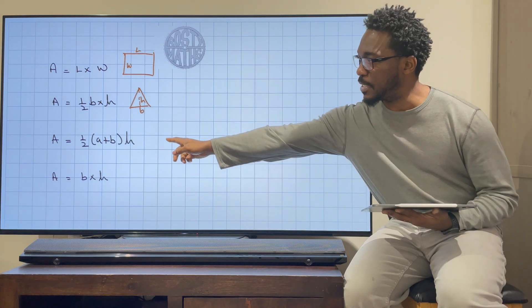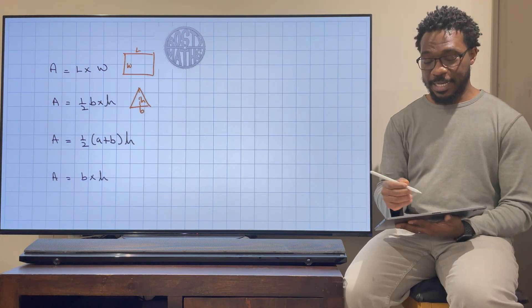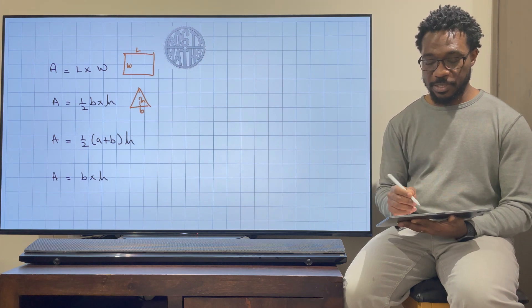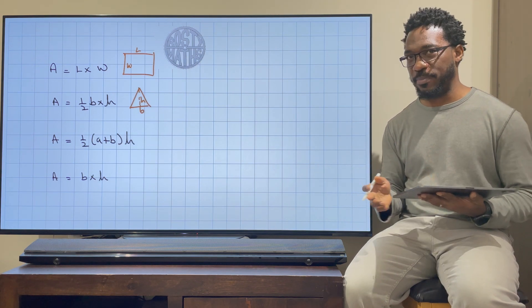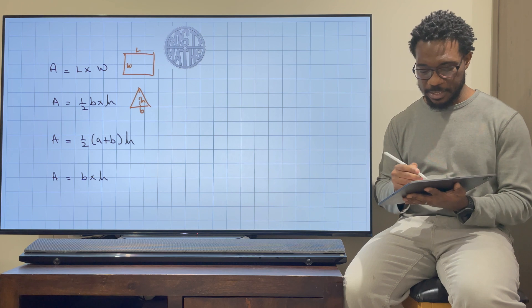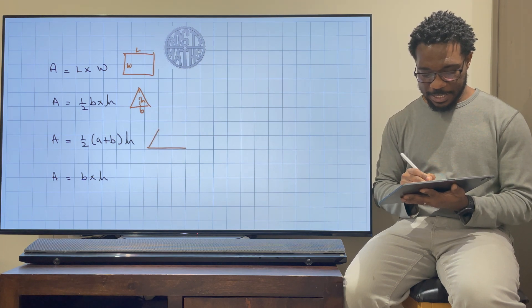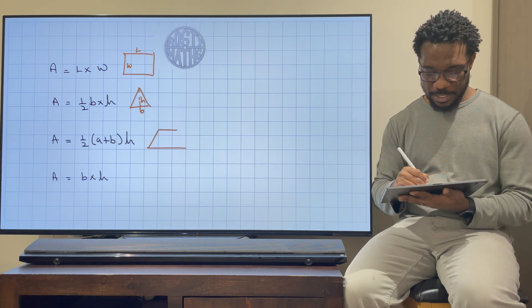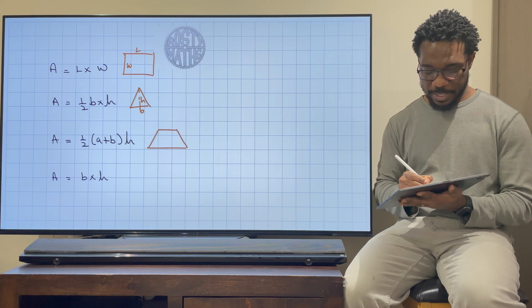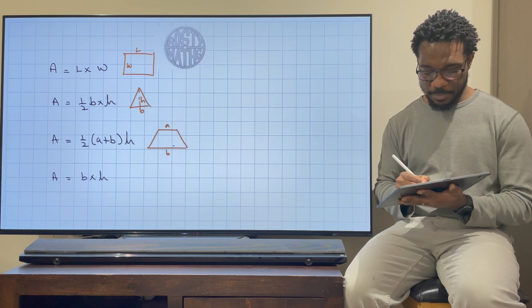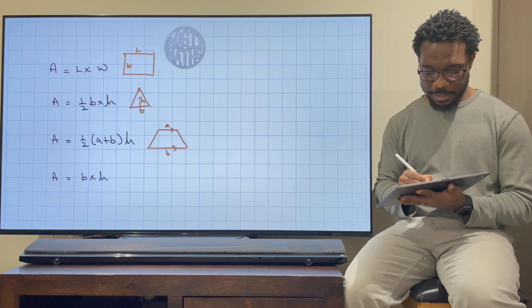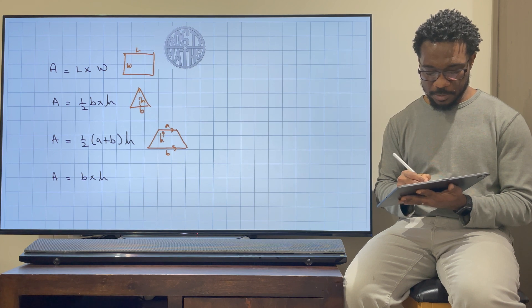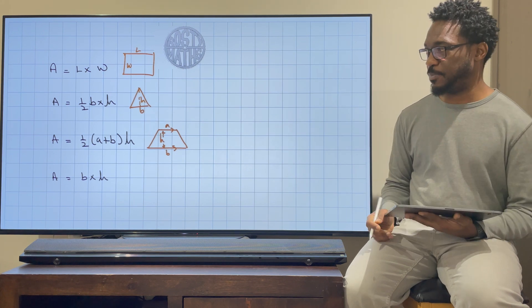You might even be familiar with this particular formula here, and I'm doing this deliberately like this because I really want to refresh your memory on what some of these formulas do. So you might remember that this formula is for the area of a trapezium, where A and B are my parallel sides, and then the height is the distance between those parallel sides.